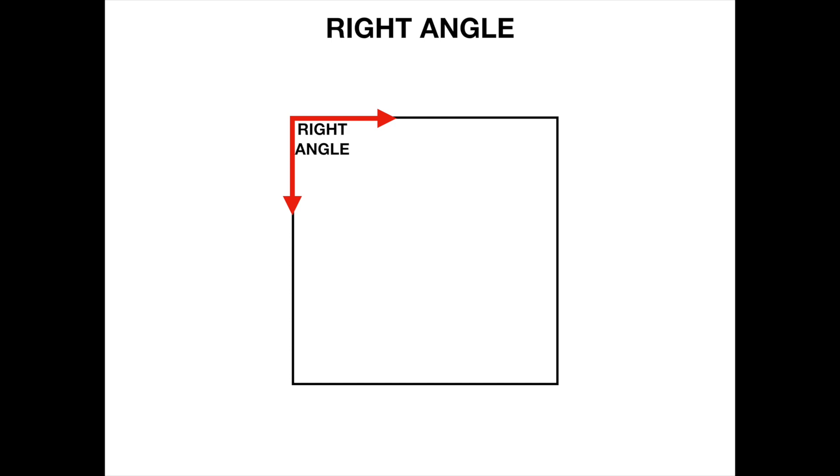So how many right angles are in this square? You can pause the video to take a moment to think. So I'm sure you've found four right angles. The first right angle on the top left of the square, another on the top right of the square, our third right angle was at the bottom left, and the fourth on the bottom right.